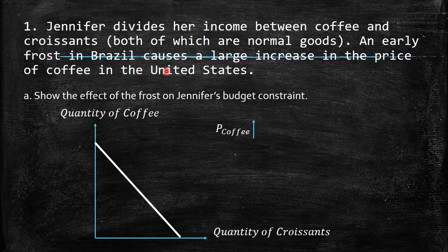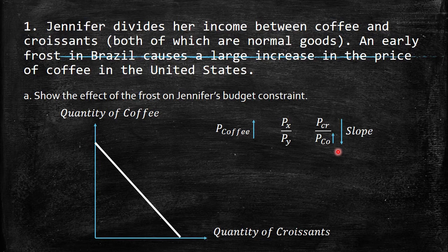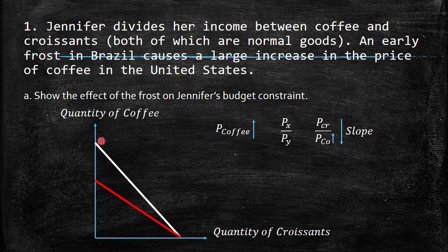The slope of the budget constraint is Px over Py. Here, x is croissant and y is coffee. If coffee price increases, the denominator is greater, so the slope will decrease — the budget constraint gets flatter. You cannot afford the same quantity of coffee if you spend all your income. The quantity of croissant stays the same because its price doesn't change. So a lot of bundles are no longer possible to consume due to this change.